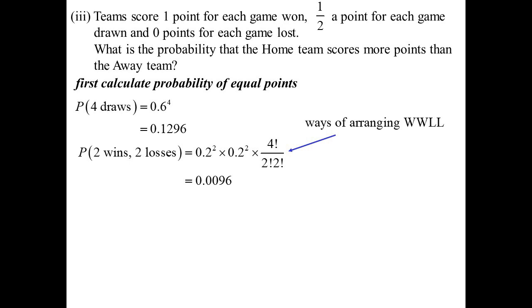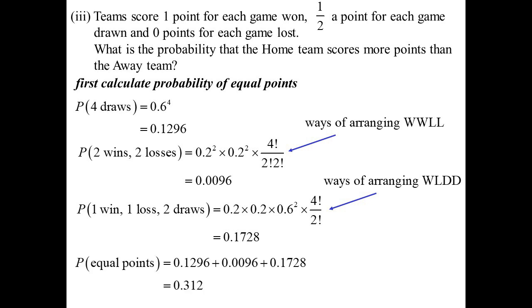But there is one other possibility. They could win a game each and lose a game each, but then on the other two boards they draw both of those, they would end up with the same number of points. So let's work that one out. The win would be 0.2, the loss would be 0.2, two draws would be 0.6 squared. But now, the number of ways of arranging that win-loss-draw-draw, 4 factorial over 2 factorial for the two draws, 0.1728. I think that covers every possibility that they get the same points. So add them all together. Probability they get equal points is 0.312.